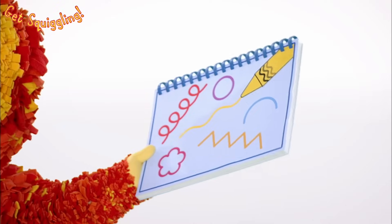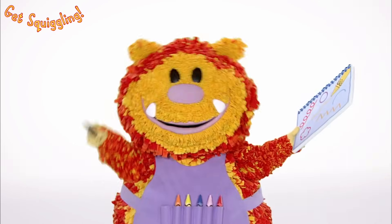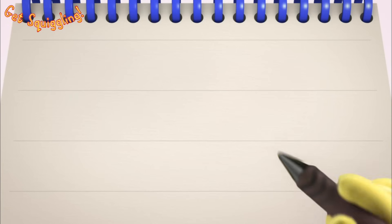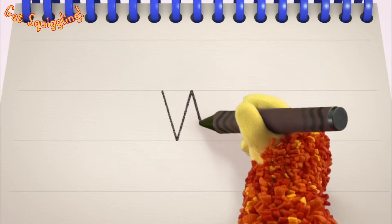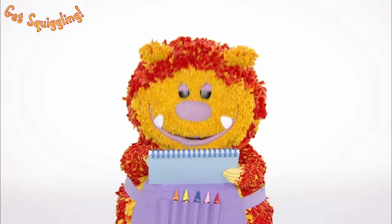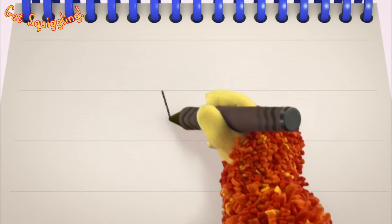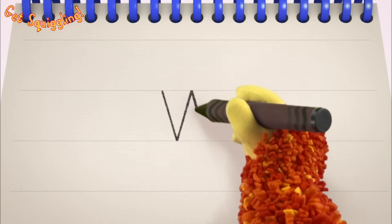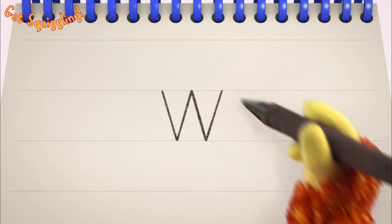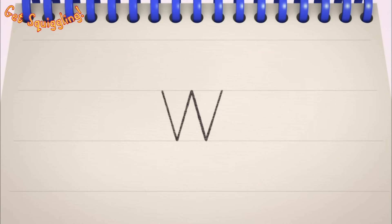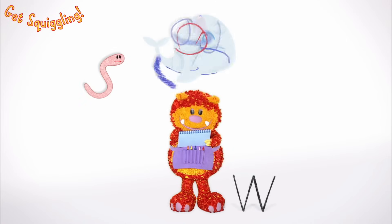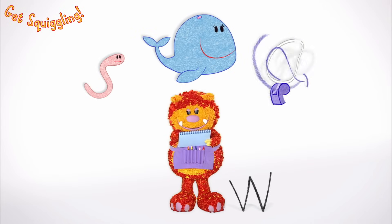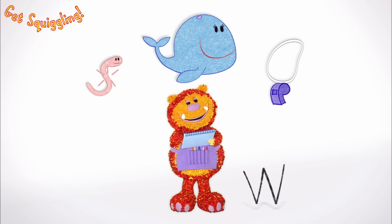Have you got your squiggle pads and squiggle sticks ready? Let's get squiggling! Holding your squiggle stick like this, move it down, up, down and up — the letter W! Let's squiggle it again: go down, up, down and up — the letter W! Shall we squiggle some things that start with the letter W? A worm, a whale and a whistle — they all begin with the letter W!